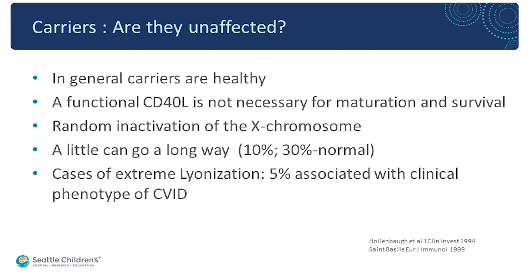However, there are reports of females having less than 10%, and around 5% demonstrate clinical disease with a phenotype like CVID. Understanding what is the minimal amount needed is going to be critical as we advance gene therapy — knowing what percentage of T cells need to be corrected to be successful.